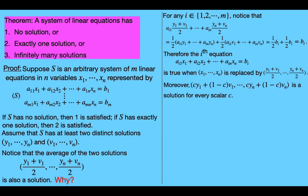But we can actually go further. For any scalar c, if we take c times y sub 1 plus (1 minus c) times v sub 1 as the first term, and continue up to c times y sub n plus (1 minus c) times v sub n for the nth term, we get that this new n-tuple is a solution to the system for every scalar c.